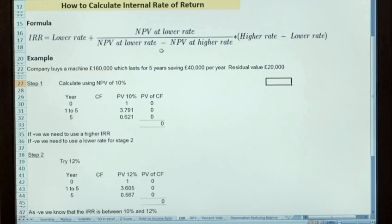So the equation for the internal rate of return is as shown above. Basically there's several variables within the calculation. You'll see it's a lower rate and a higher rate.